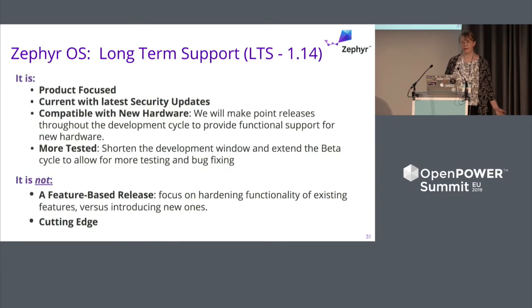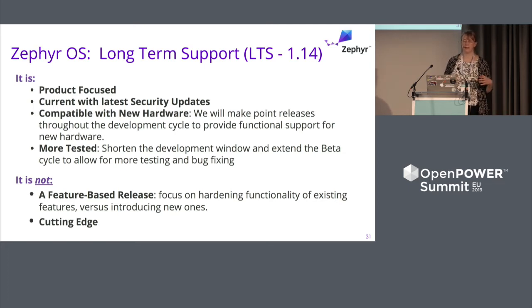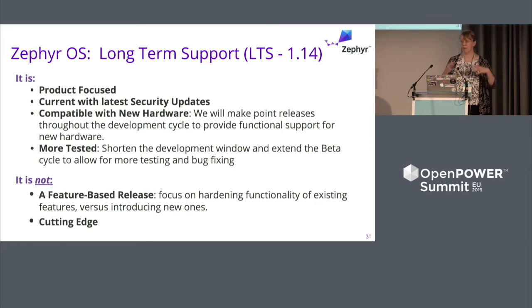Long-term support, like the Linux kernel, is product-focused. It's current with security updates and compatible with new hardware, but it's not features — all the features are going up in development. This is what we're recommending people use for products, the same way people stabilize on an LTS for things like Android or their basic product lines or distros. They sort of go with the LTSs because they know they'll have the updates going on.